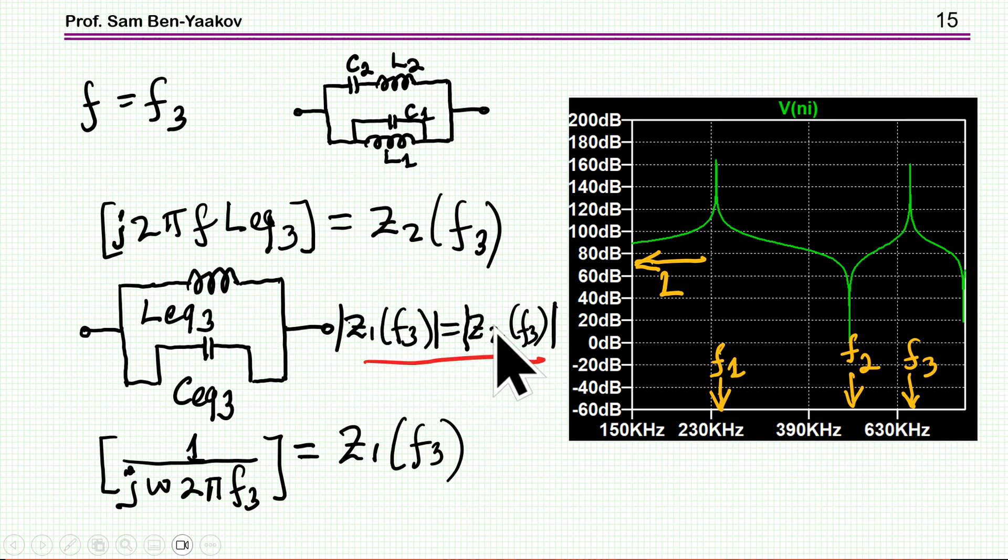this absolute value is equal to this absolute value. Because again, Z1 is capacitive, this is inductive, and this is why there is a resonance, and we have a resonant point when the absolute values are the same.